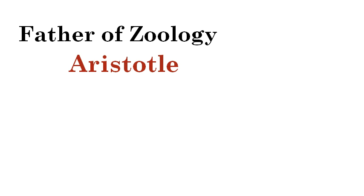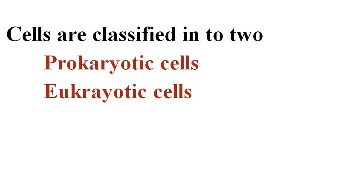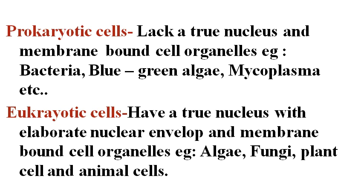Father of Zoology: Aristotle. The structural and functional unit of life is cells. Cell was discovered by Robert Hooke. Cells are classified into two types: prokaryotic cells and eukaryotic cells. Prokaryotic cells lack a true nucleus and membrane-bound cell organelles — examples: bacteria, blue-green algae, mycoplasma. Eukaryotic cells have a true nucleus with an elaborate nuclear envelope and membrane-bound cell organelles — examples: algae, fungi, plant cells, and animal cells.